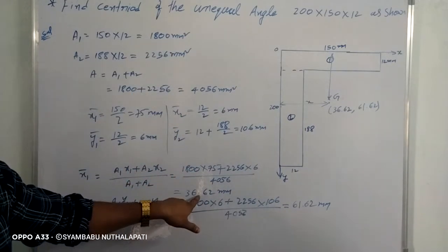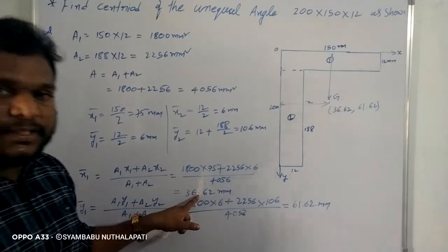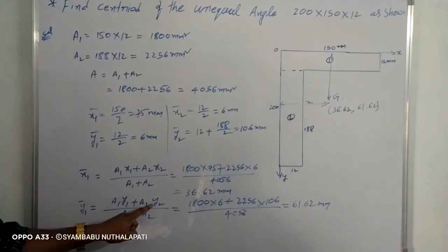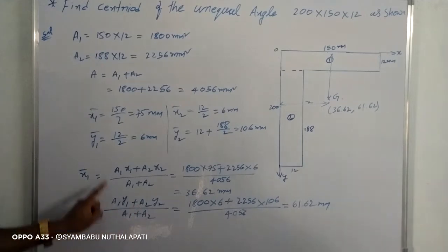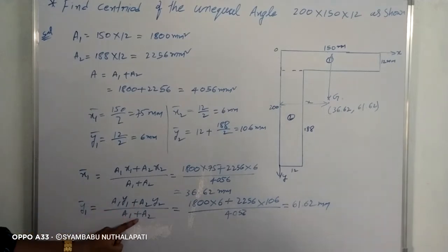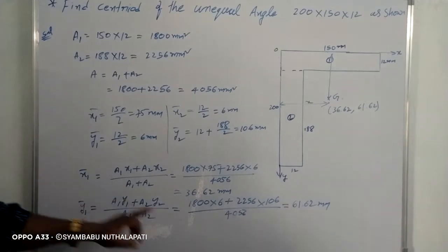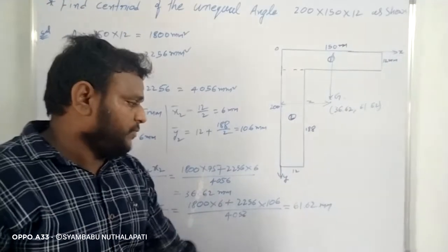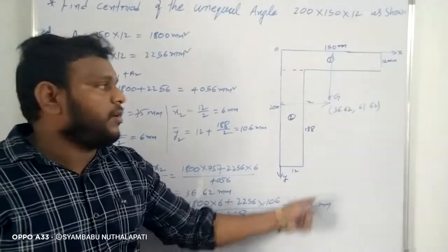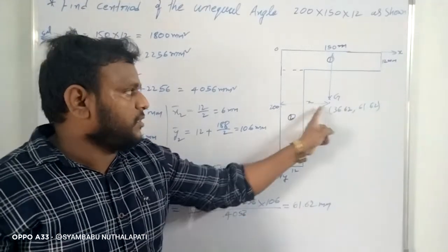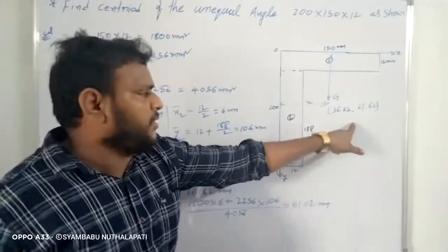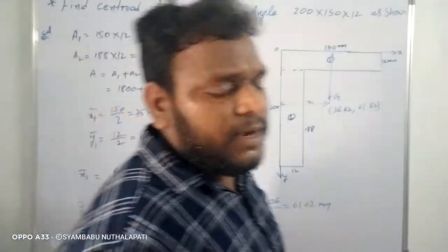We will get the centroid: x-distance from a1·y1 plus a2·y2 divided by a1 plus a2, and y-distance similarly. Centroid found out.